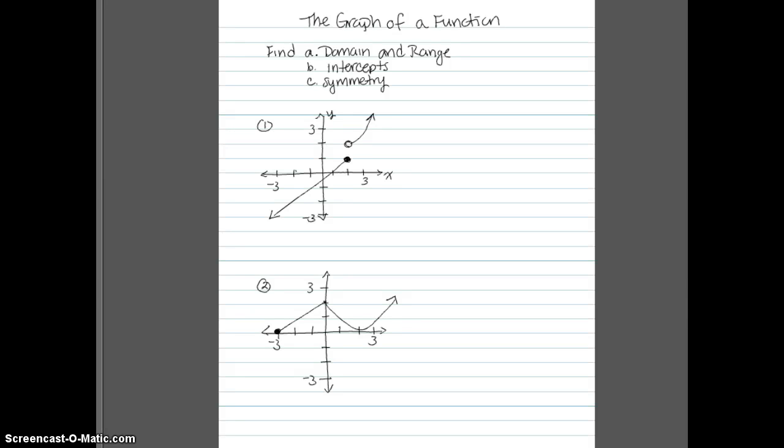So here we're going to look at how to get some information from the graph of a function. Given these two functions, we're going to find the domain and range, the intercepts, and any symmetry, either to the x-axis, to the y-axis, or to the origin.